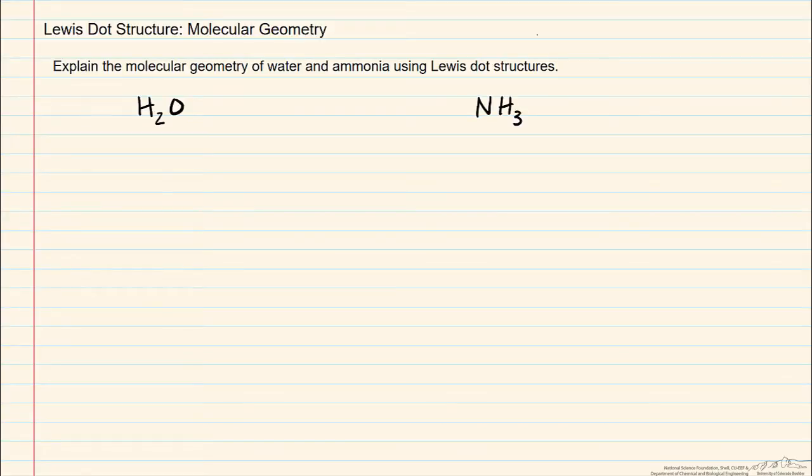So let's start with water. In determining the Lewis structure, the first step is to count the number of valence electrons. In hydrogen, we have only a single valence electron in each hydrogen atom, multiply that by 2 for the two hydrogen atoms. For oxygen, we have 6 valence electrons, and that gives us a total of 8 valence electrons.